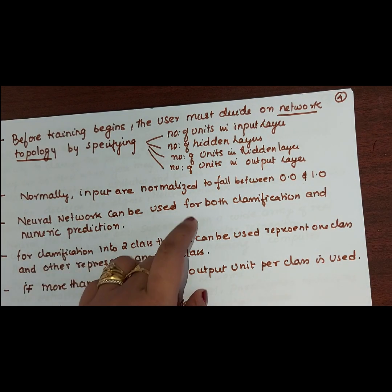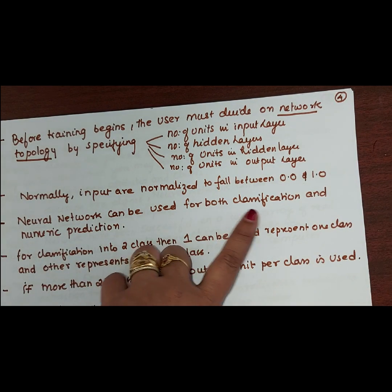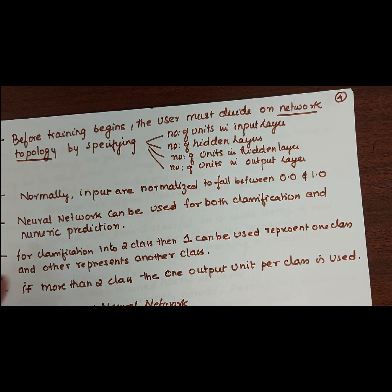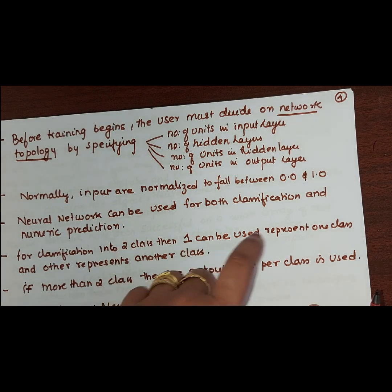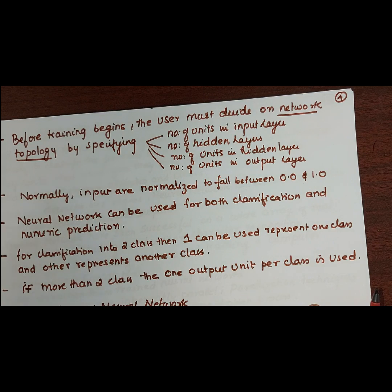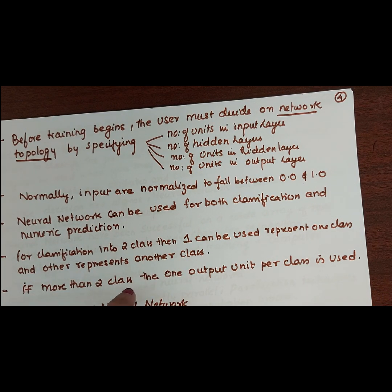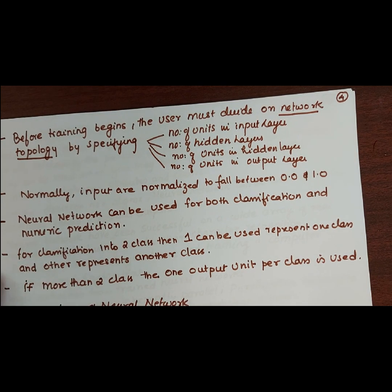Neural networks can be used for both classification and numeric prediction. For classification, if you have only two classes to predict, one output unit can represent one class and another can represent the other class. If you want to predict more than two classes, one output unit per class is needed.